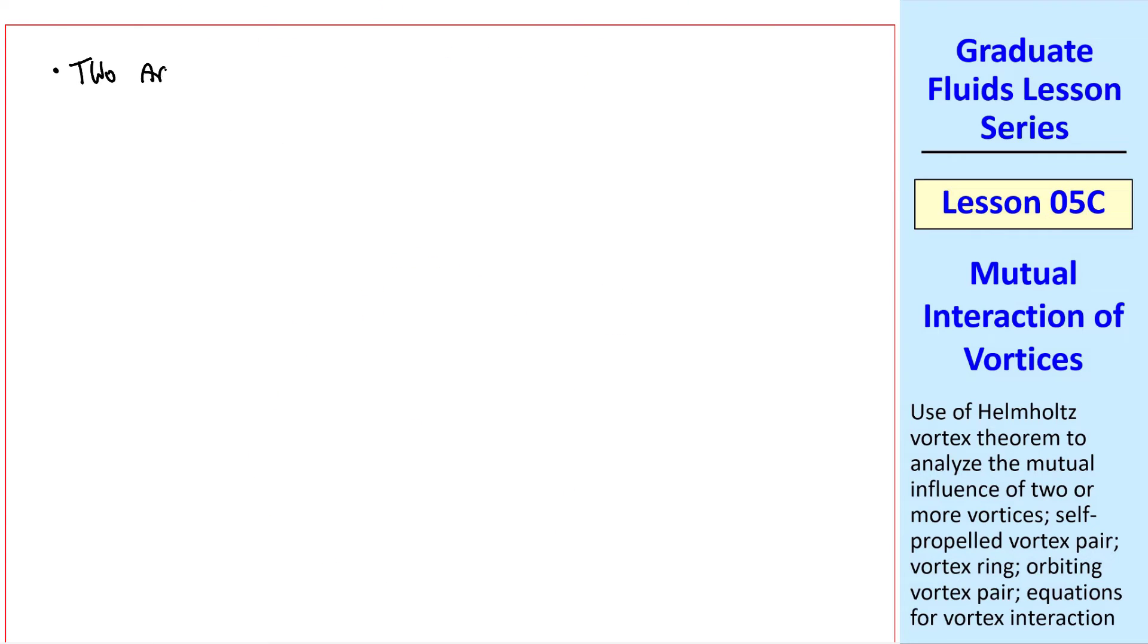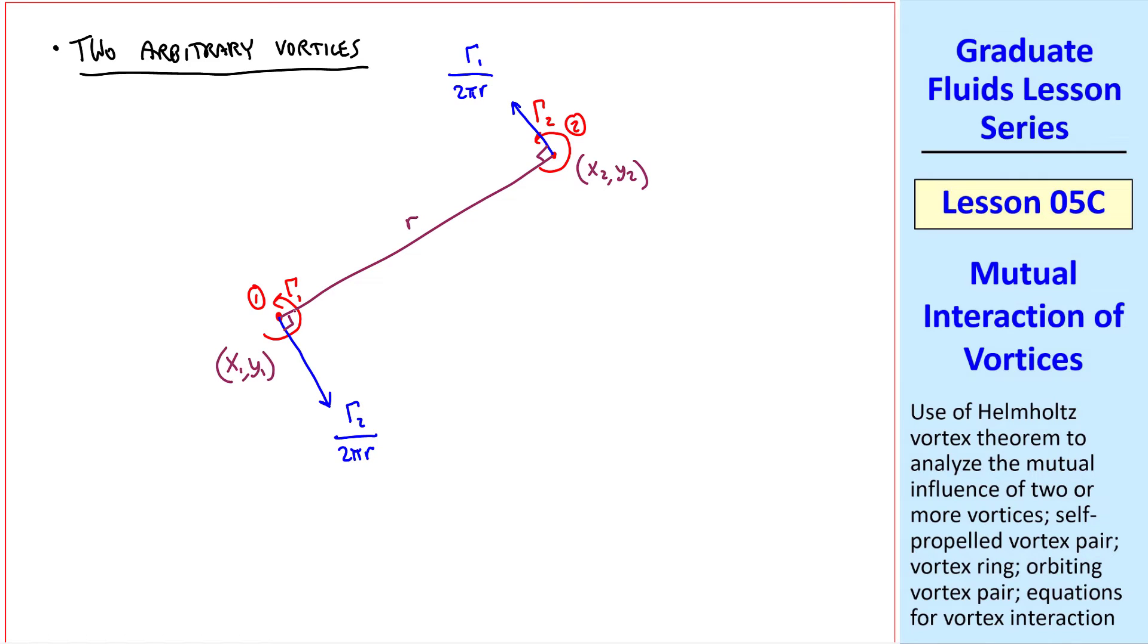Finally, let's do the math for two arbitrary vortices. We'll set ourselves up for a numerical solution. Consider vortex 1 of strength gamma_1 at initial location x_1, y_1, and vortex 2 at some other location with a different gamma, gamma_2, and initial location x_2, y_2. Let r be the distance between the two, and we know that vortex 2 will induce a velocity on vortex 1 of magnitude gamma_2 over 2 pi r. Similarly, gamma_1 will induce a velocity of gamma_1 over 2 pi r, where the directions are perpendicular to r.